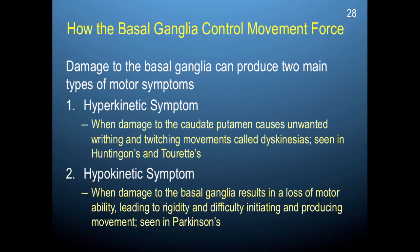The basal ganglia is most known for the control of movement force. Damage to the basal ganglia can produce two main types of motor symptoms. Hyperkinetic symptoms occur when damage to the caudate putamen causes unwanted writhing and twitching movements called dyskinesia — this is seen in Huntington's and Tourette's. Hypokinetic symptoms occur when damage results in a loss of motor ability, leading to rigidity and difficulty initiating and producing movement — this is seen in Parkinson's.